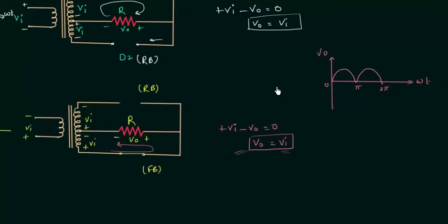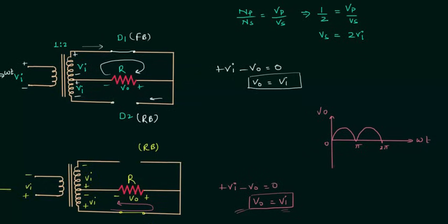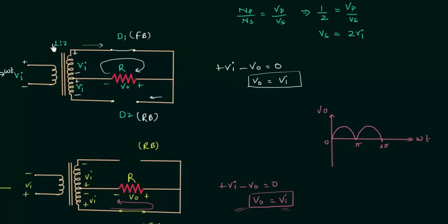This is all you should know about the full wave center-tapped rectifier. The important thing is the turns ratio, which is 1 to 2. From the next lecture we will derive different parameters of full wave rectifiers. If you have any doubt you may ask in the comment section. I will end this lecture here — see you in the next one.